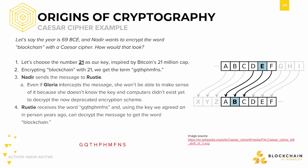So I've now received the encrypted message. How can I turn it back into the original message? As mentioned before, I need to decrypt it with the decryption function. In the case of the Caesar cipher, I'd be using the key to make the function. Only this time, instead of shifting letters to the right, I'd shift them to the left — in other words, I'm undoing the shift that Nadir did on the original message. I plug the message into the table and I get the original word: blockchain. Success.